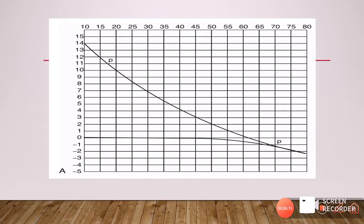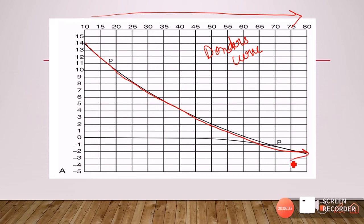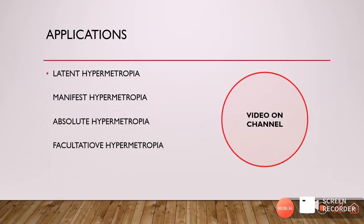This graph is called the Donders curve, which shows that as the age of the patient increases, the amplitude of accommodation gradually decreases. Regarding applications of accommodation especially in hypermetropia — there is a related video on latent hypermetropia, manifest hypermetropia, absolute and facultative hypermetropia explaining the role of accommodation, and the link will be in the description. That was all about accommodation and the physiology of accommodation. Thank you and have a nice day.